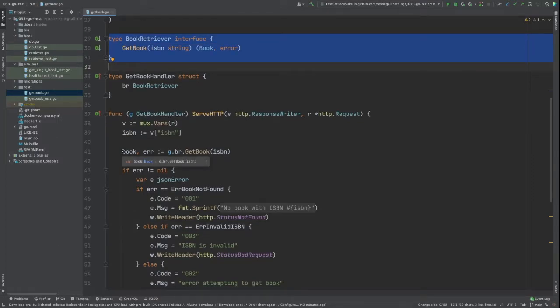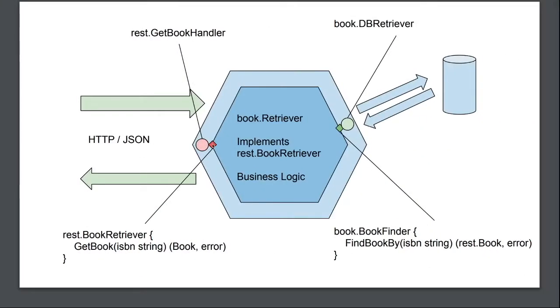In our diagram, the interface book retriever is represented by this red diamond. This is our first port. In hexagonal architecture, interfaces are known as ports. They are a boundary between two parts of the application. In this case, boundary between our HTTP layer and our business logic layer. So this port here is implemented by our business logic layer.